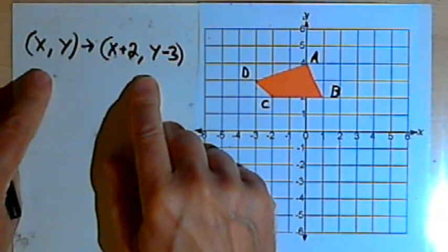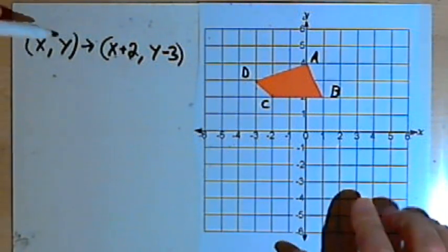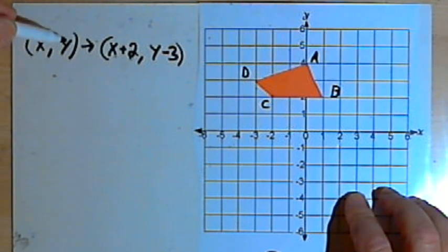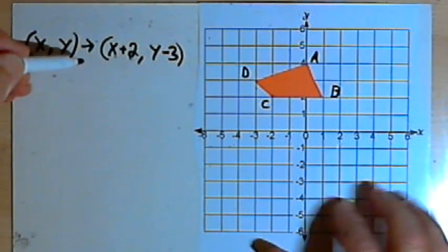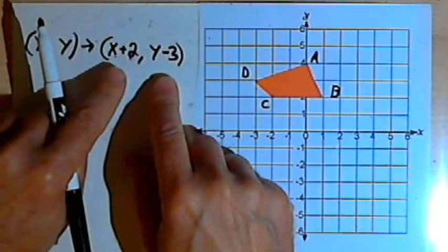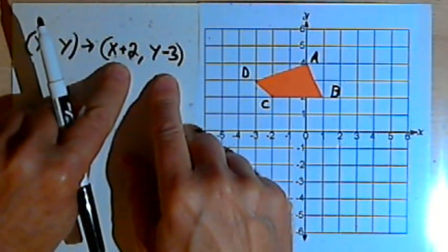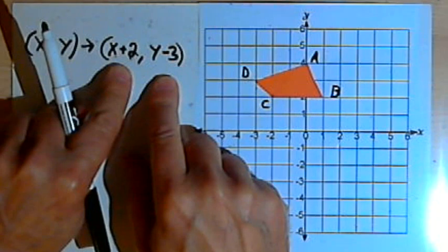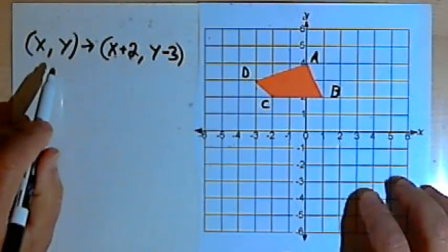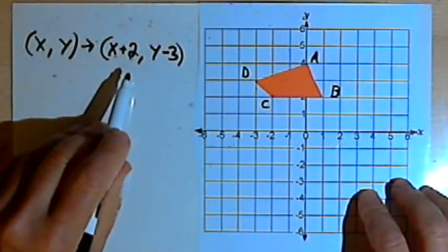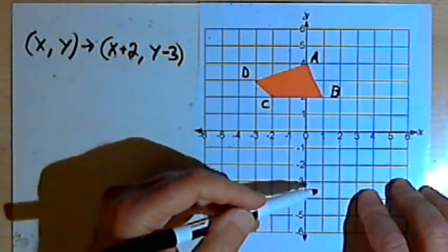Then over here on the left I've got this notation. I've got (x, y) written as a pair of coordinates, and then this arrow, and (x+2, y-3), also written as a pair of coordinates. These are the instructions that are going to tell me how to translate the image, how to move it.